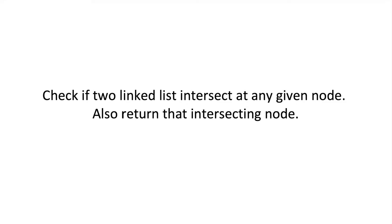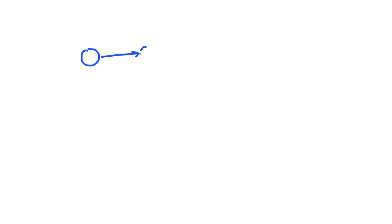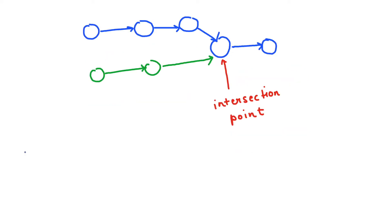Good morning friends. In this problem we need to find the intersecting node for any two given linked lists and return that intersecting node. Given two linked lists which intersect at any given point, after that their nodes become common. We need to find whether the linked lists intersect or not, and if they do, we return that intersecting node. The intersecting point can be the head node of linked list one.